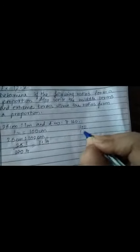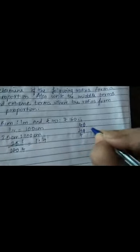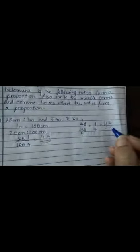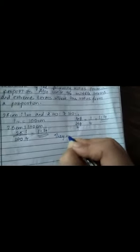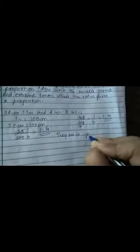And for this, I will take rupees 40 upon 160. The 0, 0 gets cut. 4 ones are 4 and 4 fours are 16. So 1 upon 4 that is 1 is to 4. So this is also 1 is to 4, and this is also 1 is to 4. So they are in proportion.